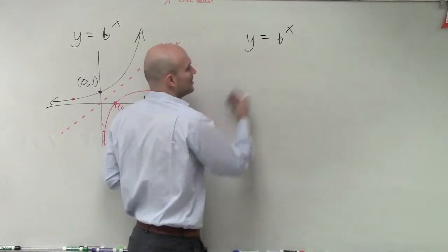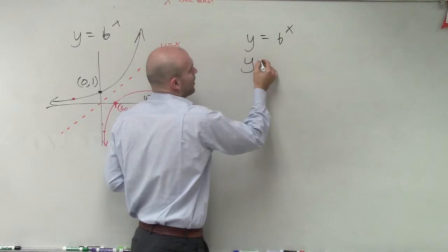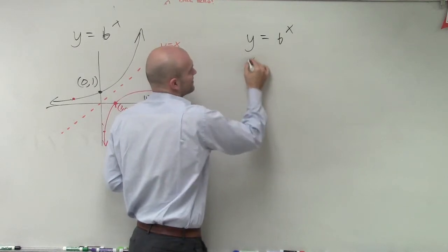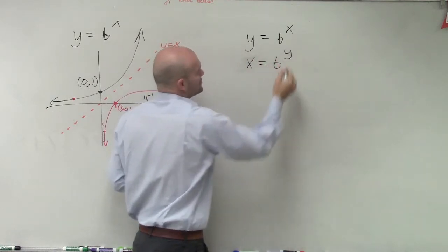So you swap your x and y variables, in this case, and you have x equals b to the y.